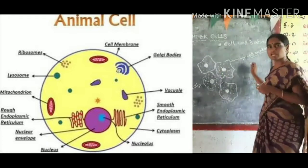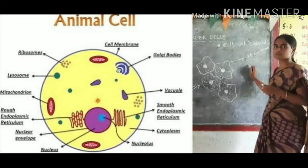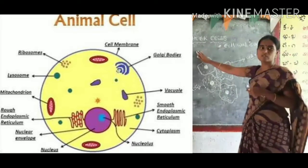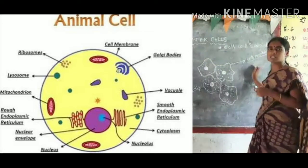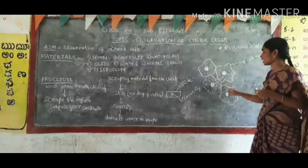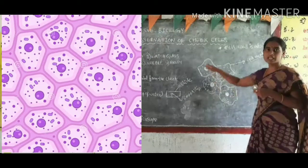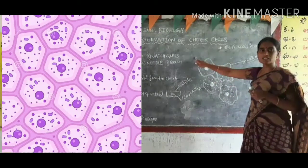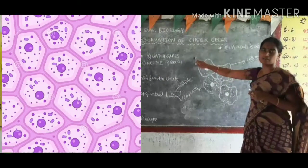The cell membrane gives shape to the cell. In the case of a plant cell, cell wall is present. In the case of an animal cell, cell wall is absent. Here, the cells are irregularly arranged. But in the case of a plant cell, the cells are arranged in a rectangular manner.